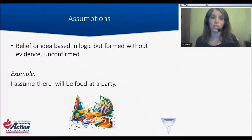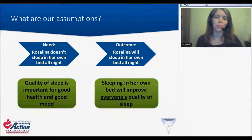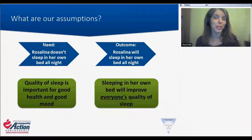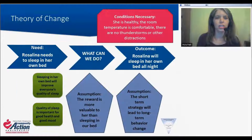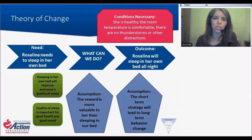If we look back at the situation with Rosalina sleeping in her own bed and start to think more critically about why is this important — why do we care that she sleeps in her own bed — well, we know that quality of sleep is important for good health and good mood. So we assume that if she sleeps in her own bed, the quality of sleep will improve for the whole family. It's important for us to articulate that as the underlying reason for wanting to get to this outcome. And then we start to think: what can we do? How do we get from the current condition to the outcome that we want? We need to identify the assumptions that we bring to that process as well.